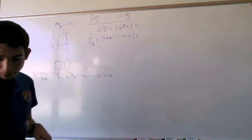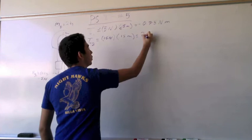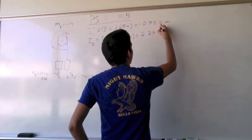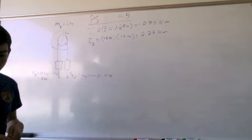This is going to give you negative 0.75 newton meters. And this one should give you 2.25 newton meters. Three quarters of a meter and two and a quarter newton meters.